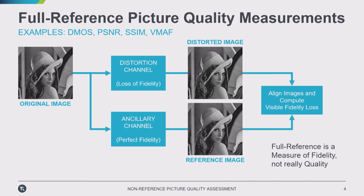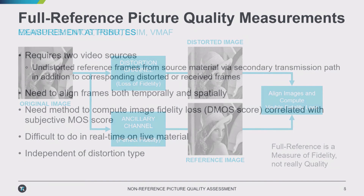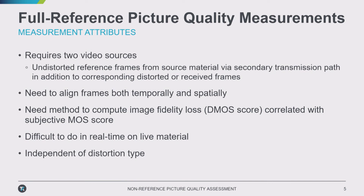The key thing about a full reference measurement is you need access to both sources — they need to be present together. This makes it impractical for live material where your monitoring point doesn't have access to the original. A full reference measurement is best suited for an in-the-lab type measurement, such as a codec evaluation: how good is my codec at reducing distortion compared to the original? You have the original and the post-encode version, and you can compare them together in the lab.